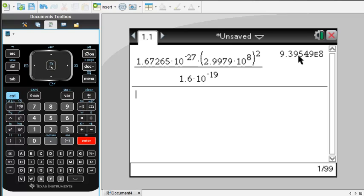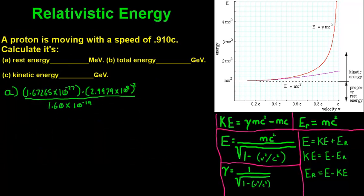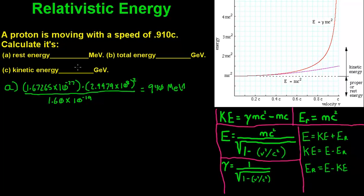That leaves us with 940 mega electron volts. So the rest energy equals 940 MeV. Now for the total energy, Part B.